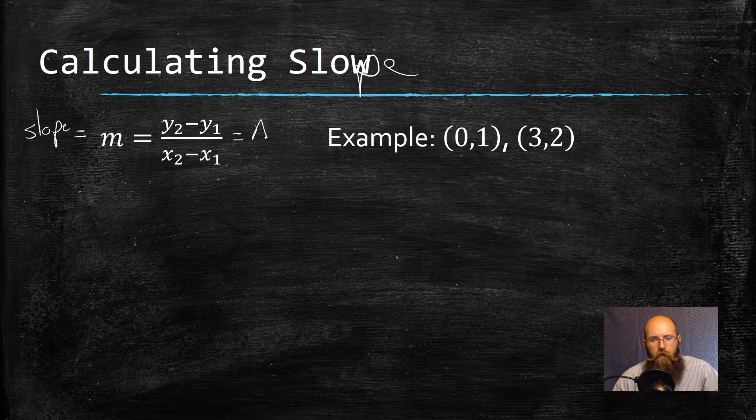And sometimes if you want to sound and look fancy, you put a delta, which is the Greek letter with a triangle there. So delta y over delta x, that means change in. So I have my example of these two coordinate points. I'm going to label this x1 and y1. Then this over here is x2 and y2.